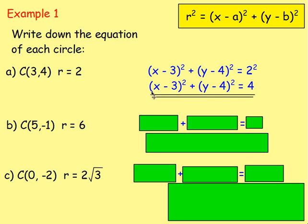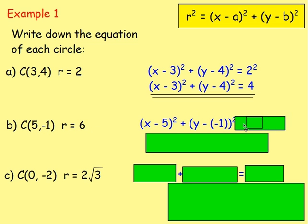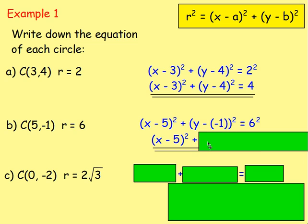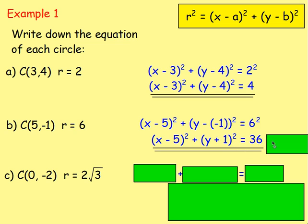Which gives you x minus 3, all squared, plus y minus 4, all squared, equals 4. You don't have to multiply that out — you can just leave it in that form. Next one: centre 5, negative 1. It's going to be x minus 5, all squared, plus y take away negative 1, all squared, which equals 6 squared. Tidying that up: x minus 5 all squared, plus y add 1 all squared, equals 36.